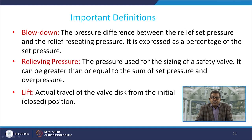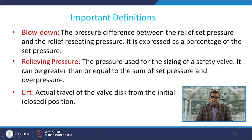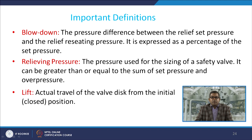Blowdown is the pressure difference between the relief set pressure and the relief reseating pressure, expressed as a percentage of set pressure. Reseating means when the pressure is relieved and the valve or disc returns to its original position. Relieving pressure is the pressure used for sizing the safety valve; it can be greater than or equal to the sum of set pressure and overpressure. Lift is the actual travel of the valve disc from the initial closed position.